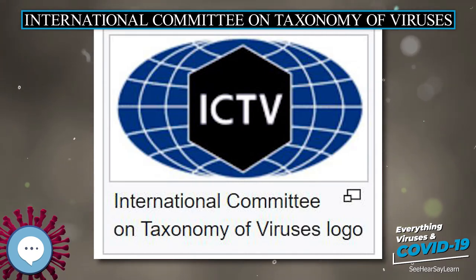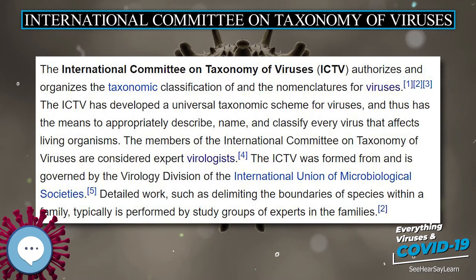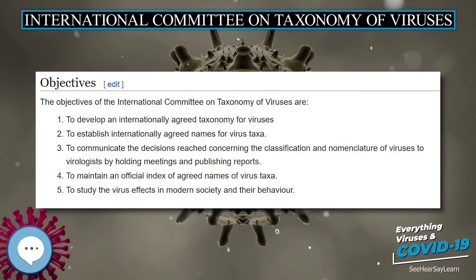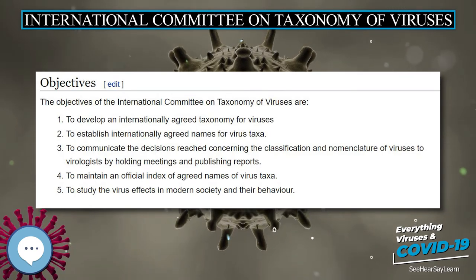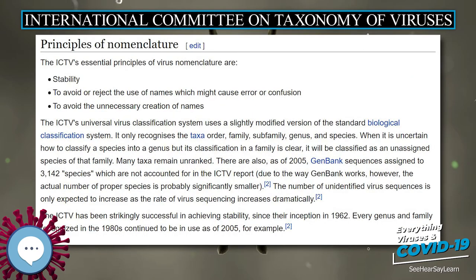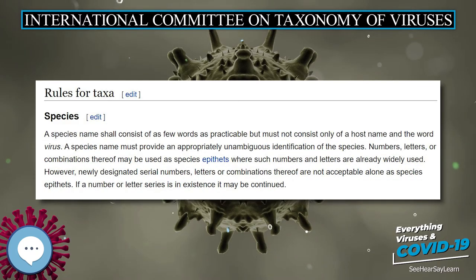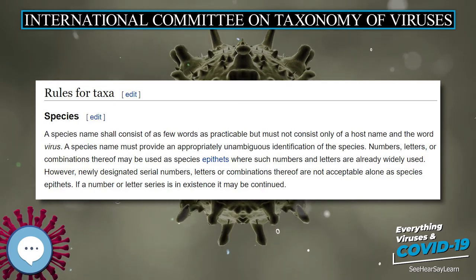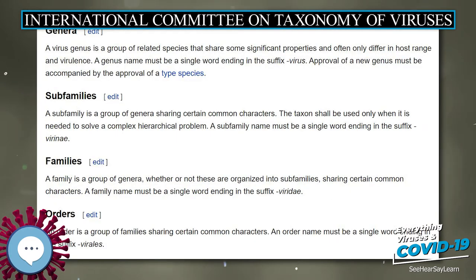Proposals for new names, name changes, and the establishment and taxonomic placement of taxa are handled by the Executive Committee of the ICTV in the form of proposals. All relevant ICTV subcommittees and study groups are consulted prior to a decision being taken. The name of a taxon has no official status until it has been approved by ICTV, and names will only be accepted if they are linked to approved hierarchical taxa.